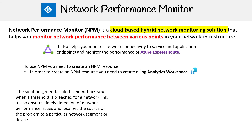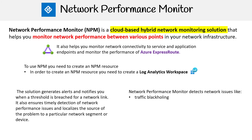This solution can generate alerts and notify you when a threshold is breached for a network link. It also ensures timely detection of network performance issues and localizes the source of the problem to a particular network segment or device. Network Performance Monitor detects issues such as traffic blackholing, routing errors, and unconventional network issues.